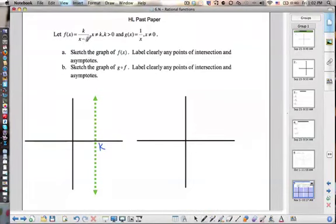And if we get some intercepts here, if we put in 0, x is 0, we get k divided by negative k. So that's negative 1. So it goes through negative 1.